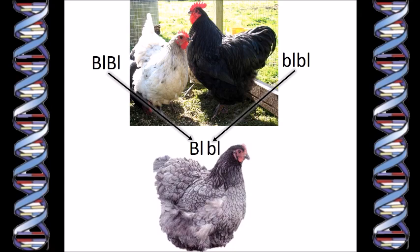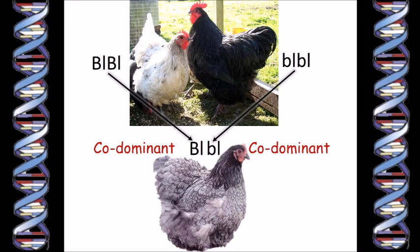So just by looking at these three chickens, we know that the black one has two bl genes, the splash chicken has two big BL genes, and the blue chicken has one of each gene. A purebred chicken, which is homozygous for a gene — i.e. has two copies of the same gene — can only pass that gene on to her baby chicks.